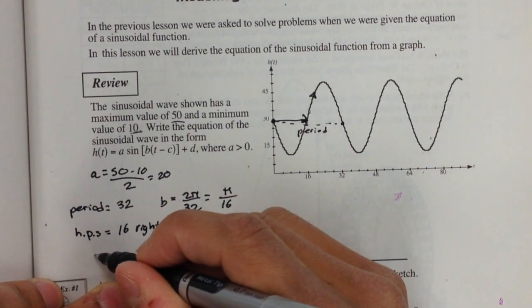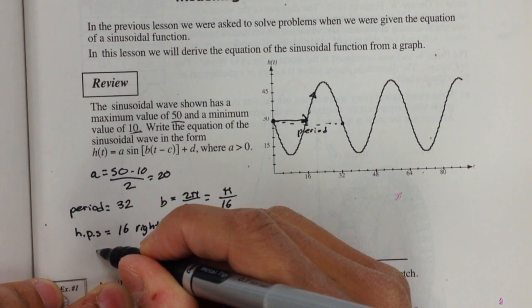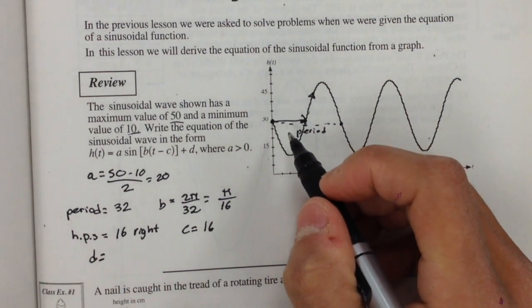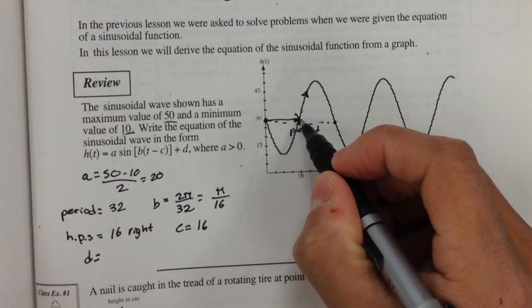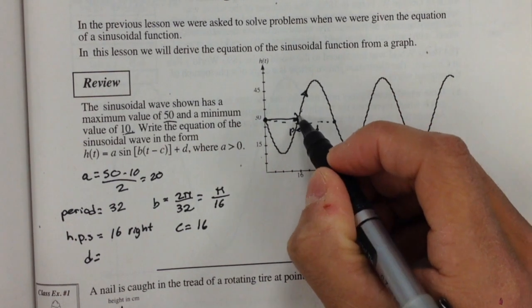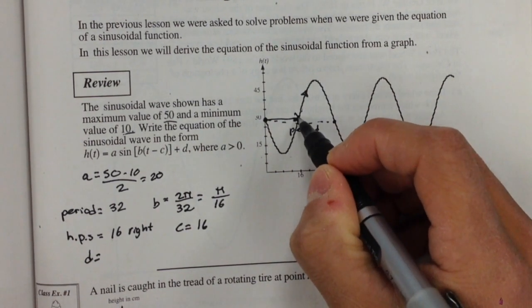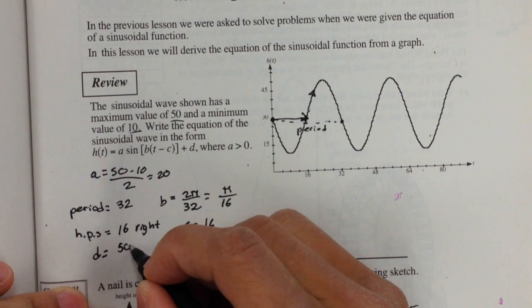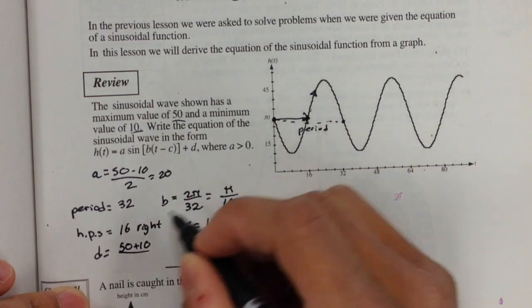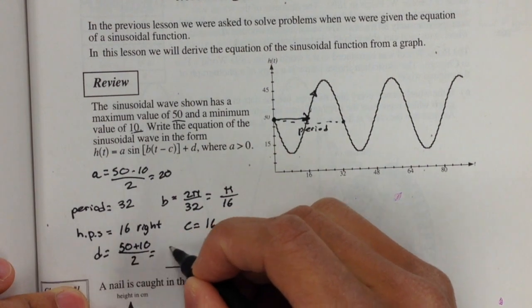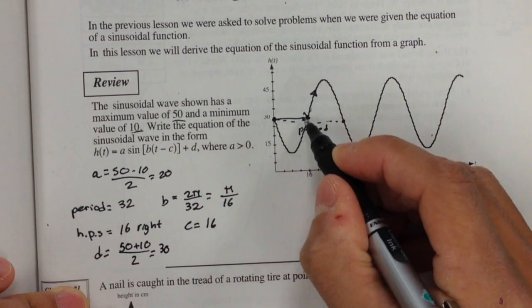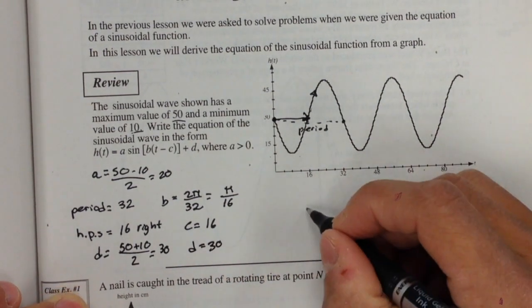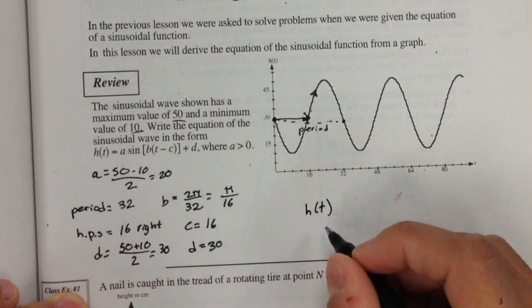Last, we're looking for our vertical displacement, our d value. Remember that a sine function passes through a point in between the amplitude. This is where it crosses the x-axis. If we were to find that halfway point, 50 the max plus the min divided by 2, our halfway point would be at 30. So my vertical displacement is 30.